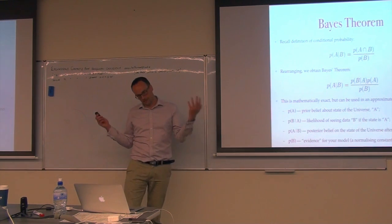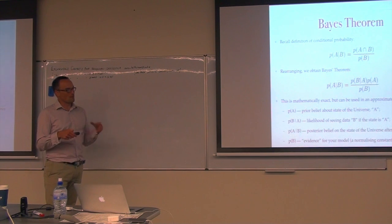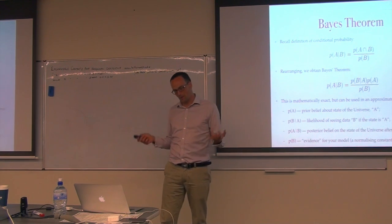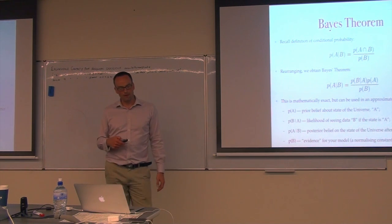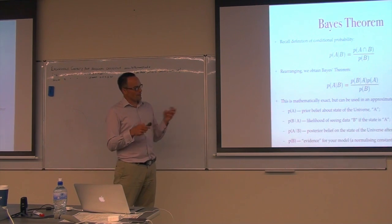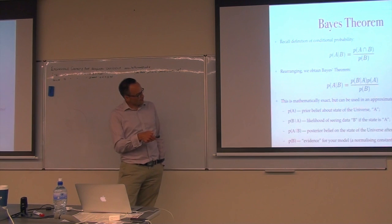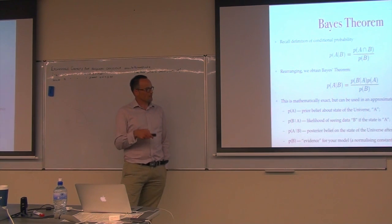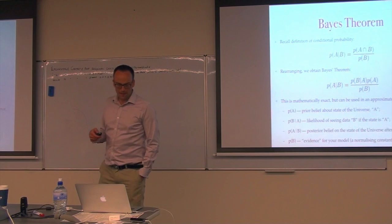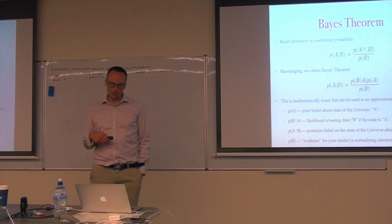Bayesian statistics is widely used in inference these days. It took a long time for Bayes' theorem to become popular because it's computationally expensive to evaluate numerically, and it's only because computers have become more powerful recently that this has become feasible. In parameter estimation, if all you care about is the distribution of A given B — your distribution of source parameters given the data — the quantity P(B) in the denominator is just a normalization constant, though it has a use in a model selection context.